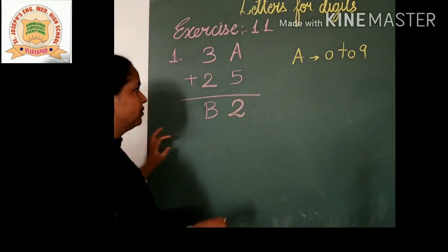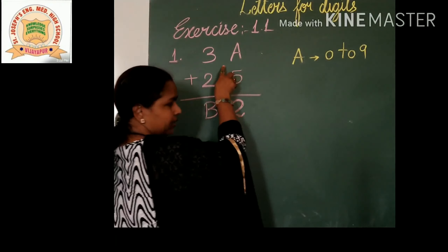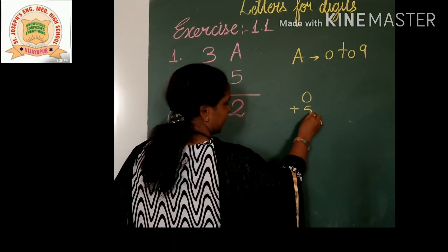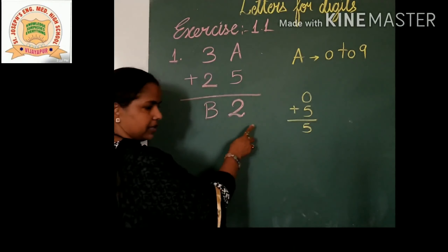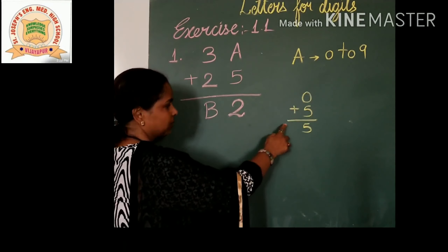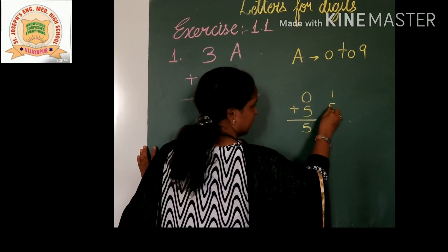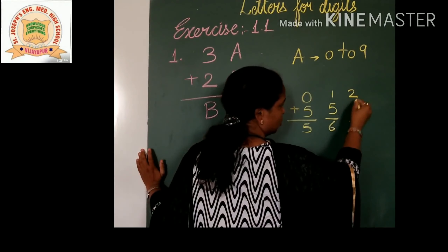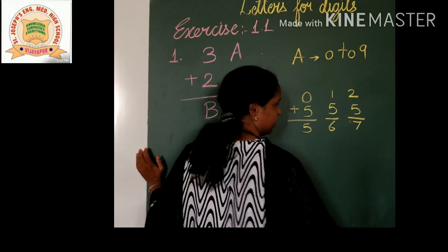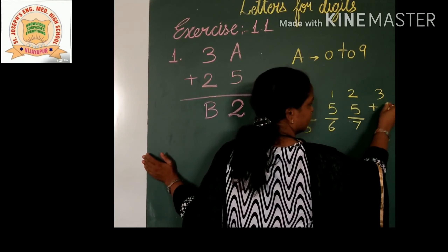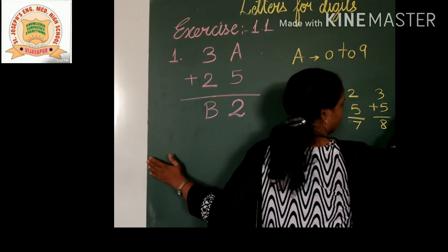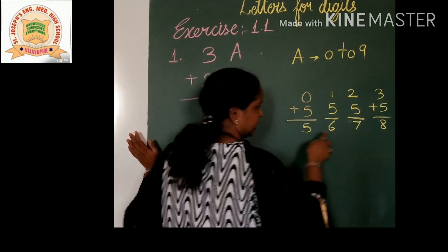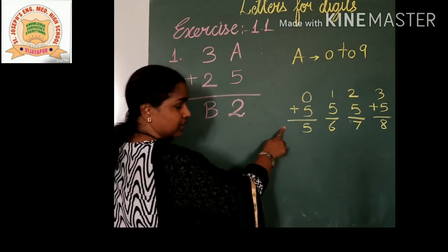We will go step by step. First we consider A as 0 — wherever A, replace with 0. It means 0 plus 5 equals 5. But here we want 2, so this is not a possibility. Next, 1 plus 5 equals 6 — reject. 2 plus 5 equals 7 — reject. 3 plus 5 equals 8 — reject. 4 plus 5 equals 9 — reject. These all give digits greater than 2, so these are not possibilities.